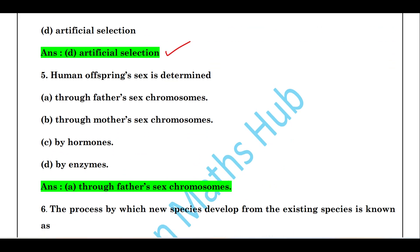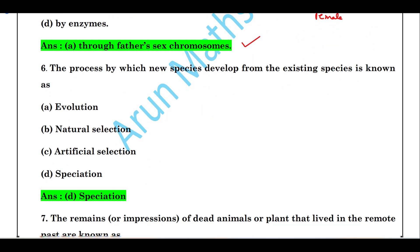Next question: human offspring sex is determined by the father's sex chromosome. The father has chromosomes X and Y. If X fuses with the X of the mother, then it is female. If Y fuses with the X of the mother, then it is a male — that is, a baby boy. So human offspring sex is determined by the father's sex chromosome.